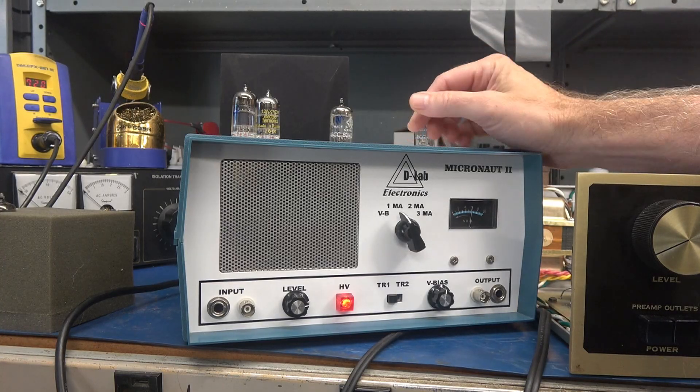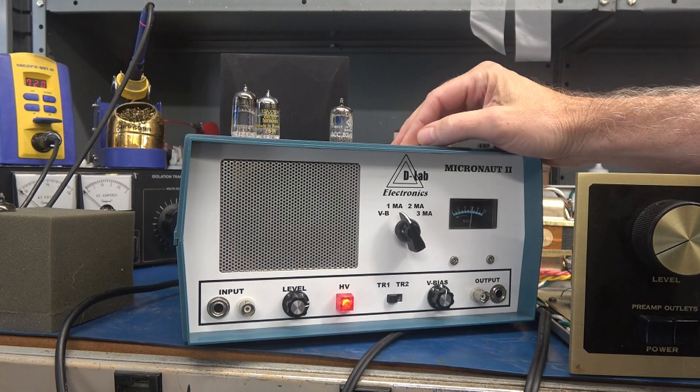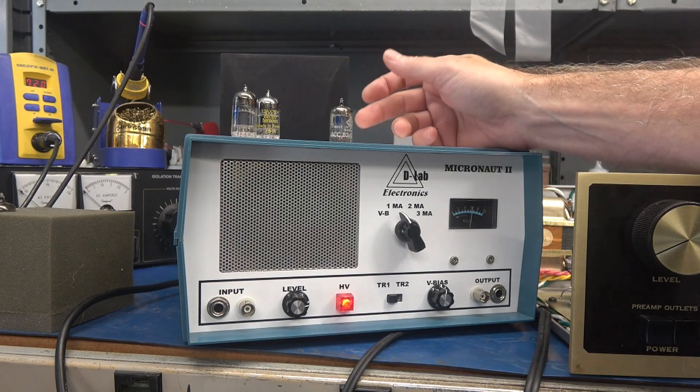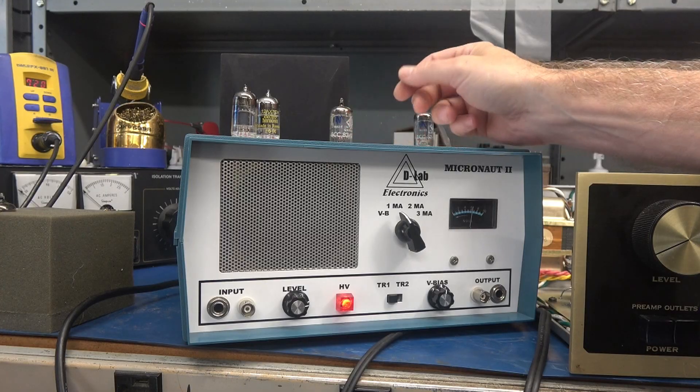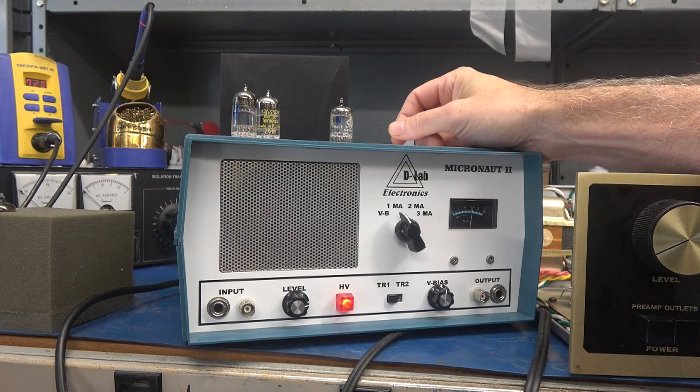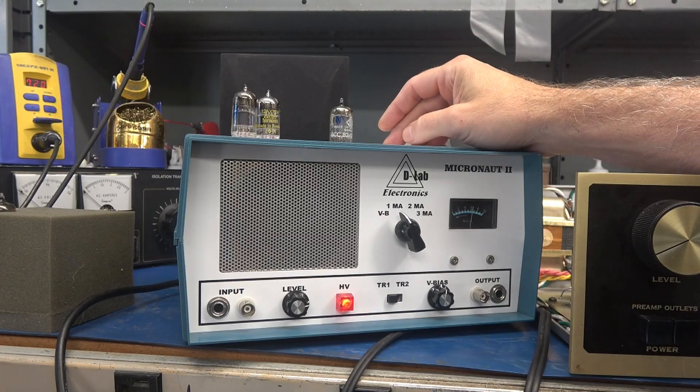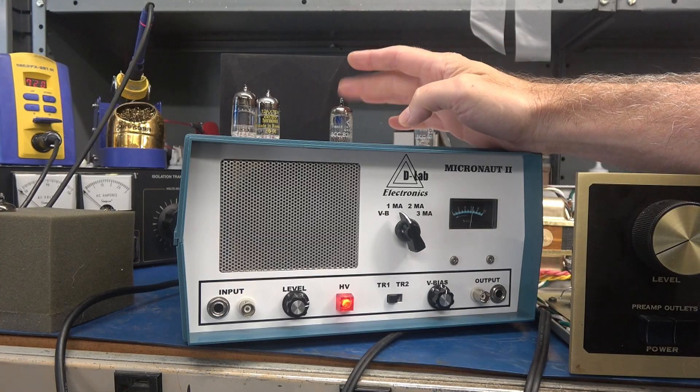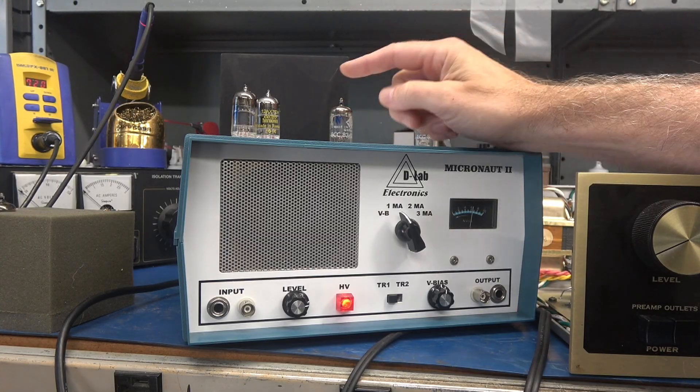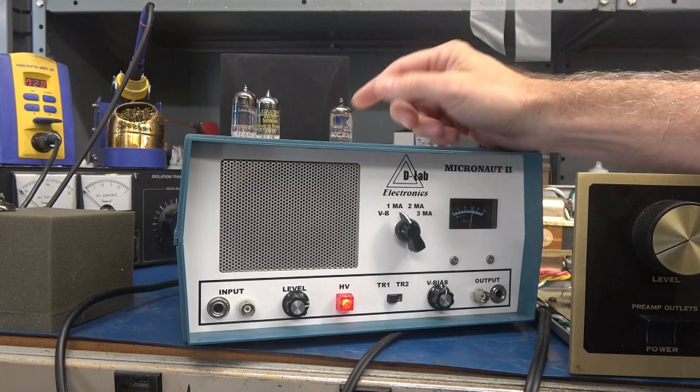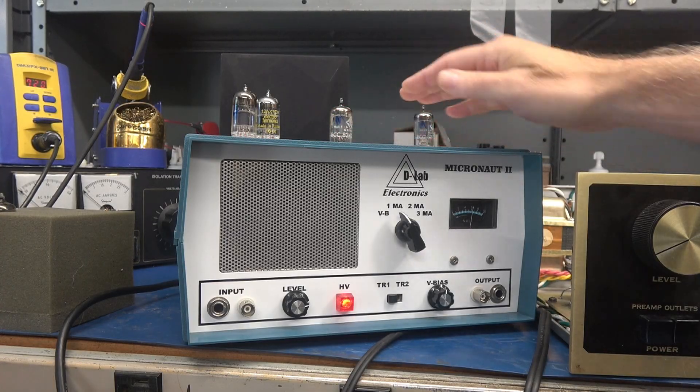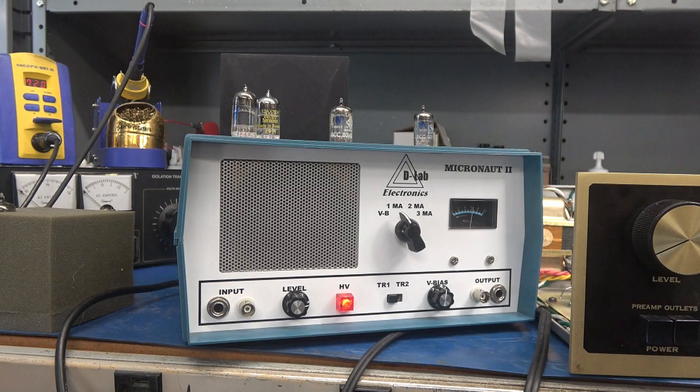So yes, in case you're interested, D-Lab is manufacturing the Micronauts. This is the Model 2. And I have a Model 3 in the works. They can test preamp tubes only. So it can do the EF86, 12AX, T's, and U's, and then 6SL7 or 6SN7. That is the extent of what the Micronaut can do at this point.